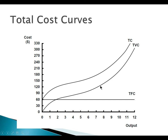The total variable cost curve shifts upward by 60 points because there is $60 of total fixed cost, and this $60 of fixed cost is added at each point of total variable cost. So total variable cost plus $60 becomes total cost. This difference between total variable cost and total cost remains fixed — that is the fixed cost portion.